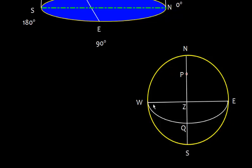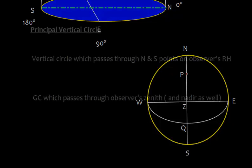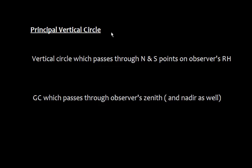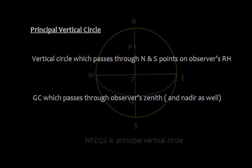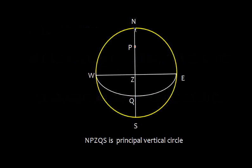We also need to define the principal vertical circle, which is the vertical circle that passes through the north and south points on the observer's rational horizon. Obviously this is also a great circle which passes through the observer's zenith and nadir as well. In this diagram, N-P-Z-Q-S is the principal vertical circle.